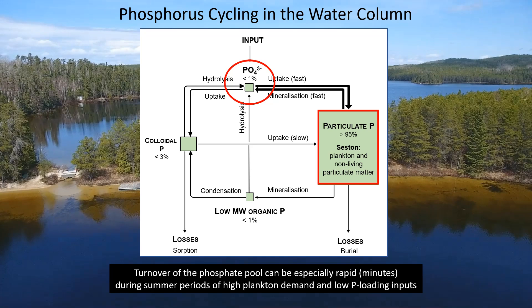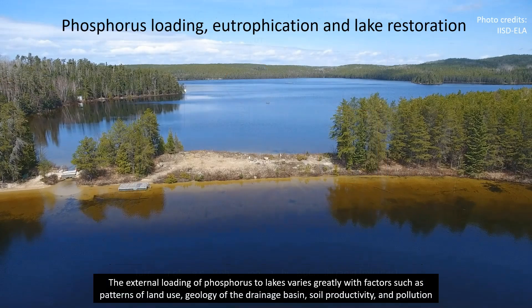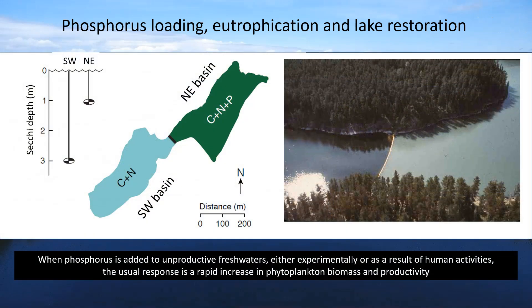Turnover of the phosphate pool can be especially rapid — minutes — during summer periods of high plankton demand and low P-loading inputs. The external loading of phosphorus to lakes varies with factors such as patterns of land use, geology of the drainage basin, soil productivity, and pollution. When phosphorus is added to unproductive fresh waters, either experimentally or as a result of human activities, the usual response is a rapid increase in phytoplankton biomass and productivity.